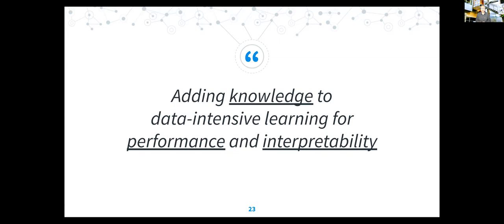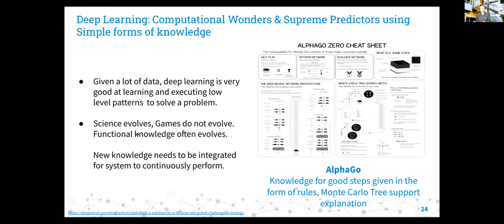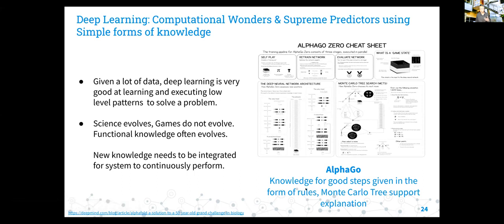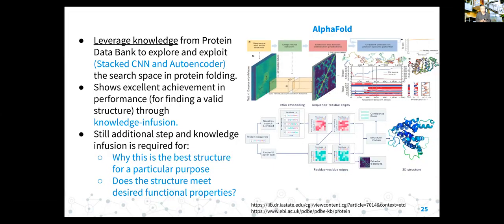Adding knowledge to data-intensive learning provides both performance and interpretability and explainability. This is already being done to some level but not overtly. In spectacular efforts like AlphaGo, game-related knowledge is incorporated in terms of what constitutes good steps, and you can use Monte Carlo tree search to create an explanation of why those steps work. But this is still a baby step - the kind of knowledge infused is very basic, and while it works for games, in the real world the knowledge continues to change.